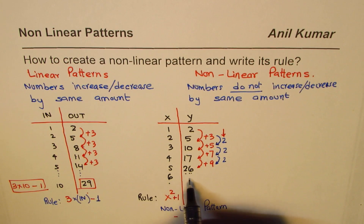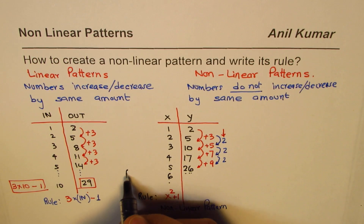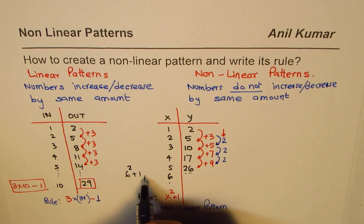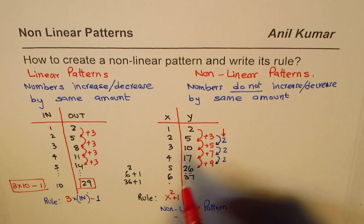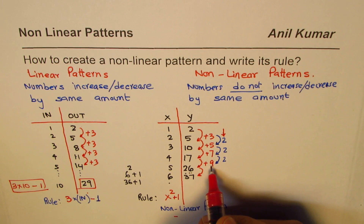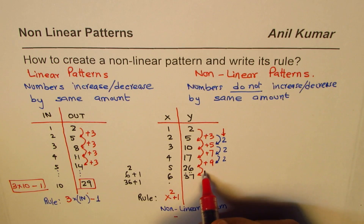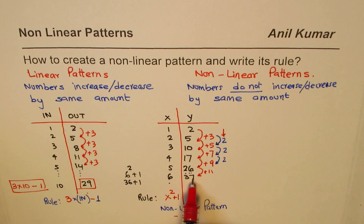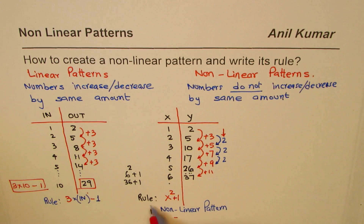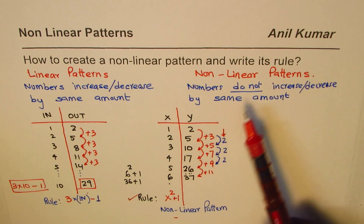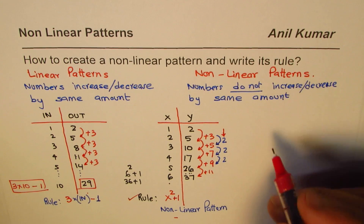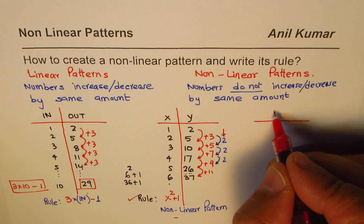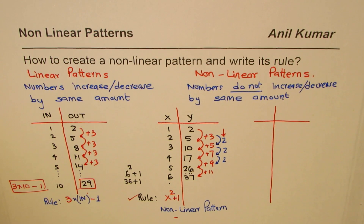Extending to x equals six: six squared is thirty-six, plus one is thirty-seven. We can also verify by adding eleven to twenty-six, which gives thirty-seven. So the rule x squared plus one works. We've created a nonlinear pattern and written its rule.